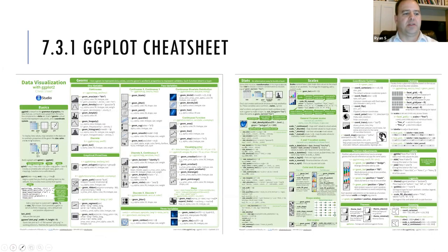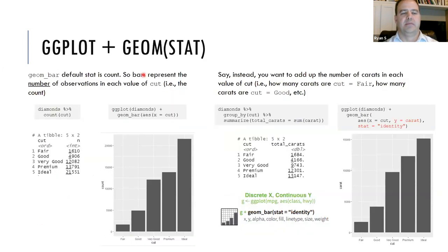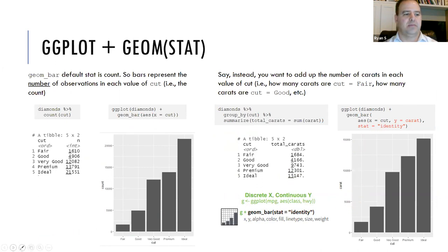We looked at the ggplot cheat sheet. We also talked about stat as a way to present other kinds of counting rather than counting the number of observations. You can use stat to count — in this case the sum of the carats in that dataset.